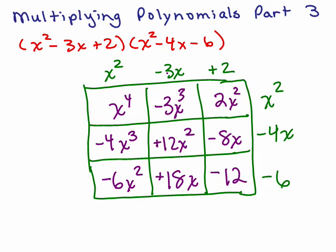If you write your terms in descending order — x squared term, x term, and constant — the cool thing is that along the diagonals will be the like terms. So x to the fourth has only one term, but there are two x cubed terms right here, so we just add their coefficients: negative 4 and negative 3 is negative 7x cubed.